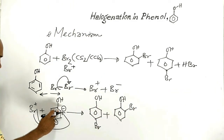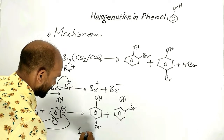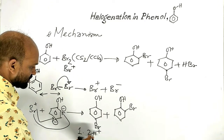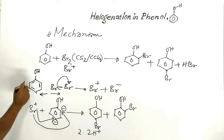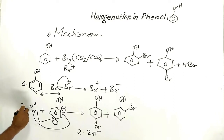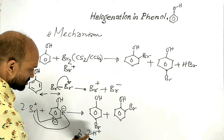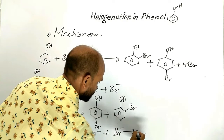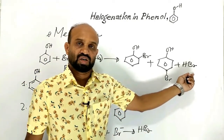Hydrogen atoms from ortho and para positions go out as protons — that is, two hydrogen atoms leave as protons. These protons combine with the bromide ion produced from the bromine molecule. This proton and bromide ion form hydrogen bromide, which is produced as a by-product.